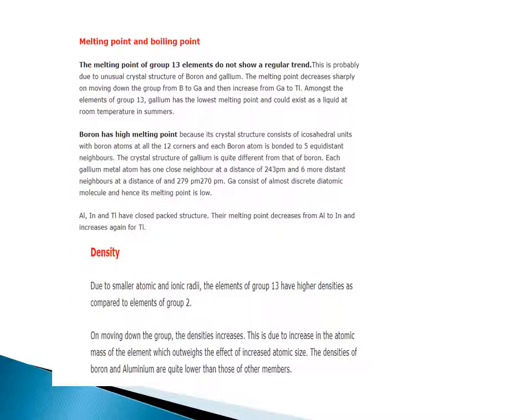Melting point and boiling point. The melting points of group 13 elements do not show a regular trend. Due to the unusual crystal structure of boron and gallium, the melting point decreases sharply from boron to gallium and then increases from gallium to thallium. Gallium has the lowest melting point and could exist as a liquid at room temperature in summers. Boron has a high melting point because its crystal structure consists of icosahedral units. Aluminium, indium, and thallium have close-packed structures.